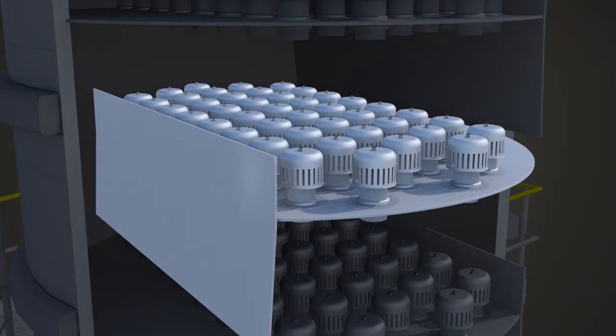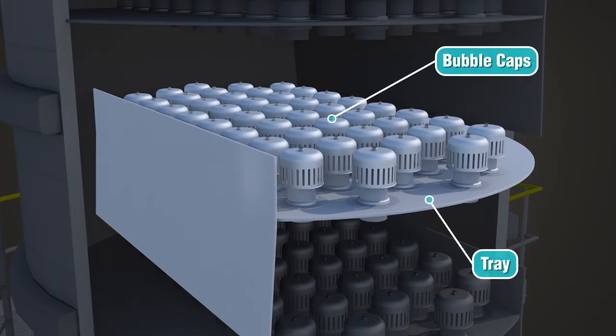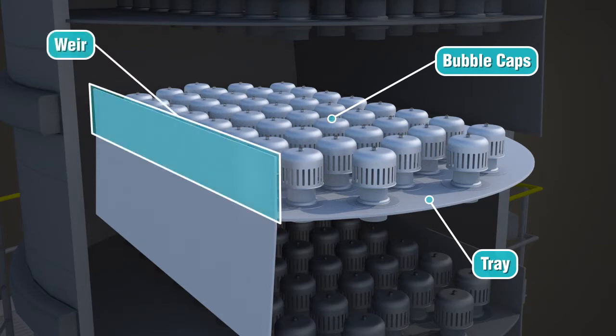The bubble cap tray consists of four main components: a tray, the bubble caps, a weir, and a downcomer.